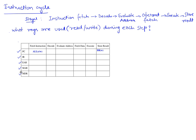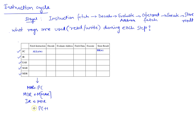Let's take one instruction and walk through it. During instruction fetch, whatever is in the PC gets put into the MAR so we can go fetch the instruction. We go to memory, memory gets the contents of that location and puts it into MDR. Whatever is in MDR gets put into the instruction register. Then we take the old value of PC, add 1 to it, and put it back into PC.